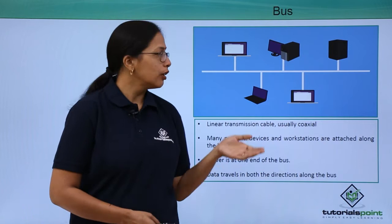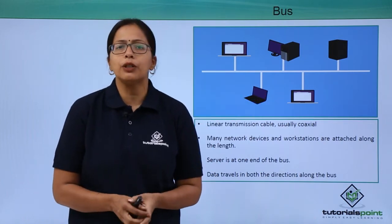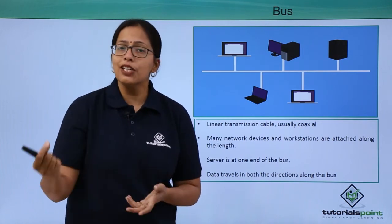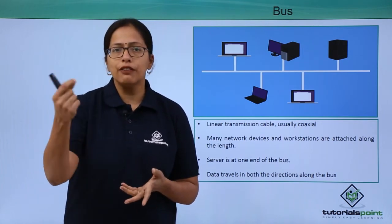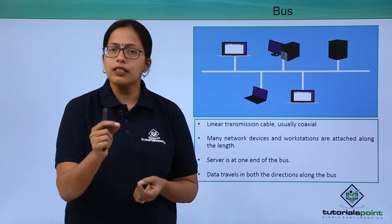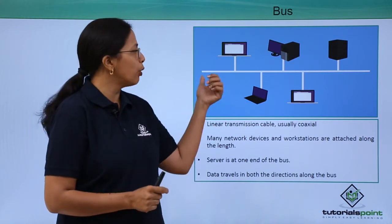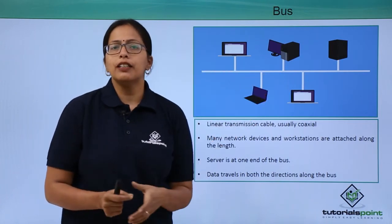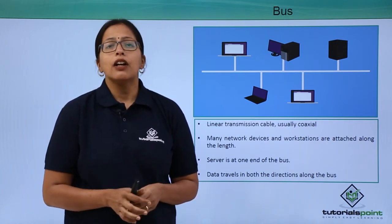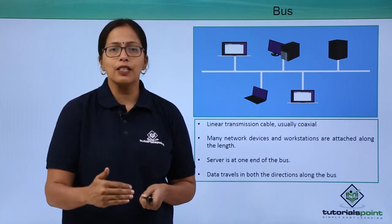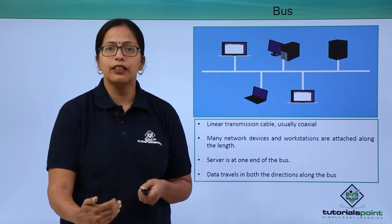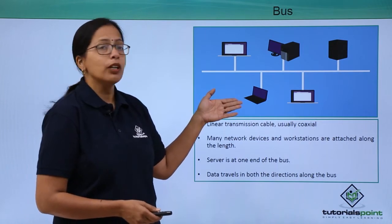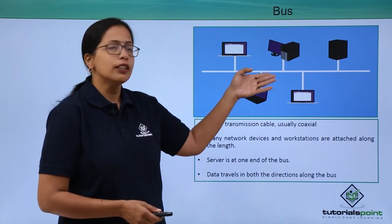If a node wants to transmit a message to another node, it will transmit that message and put the destination address of the receiving station in the packet. This message will travel in both directions. All workstations check what is being transmitted, and any workstation whose address matches the destination address will accept that message. That is how the message gets transferred from source to destination.